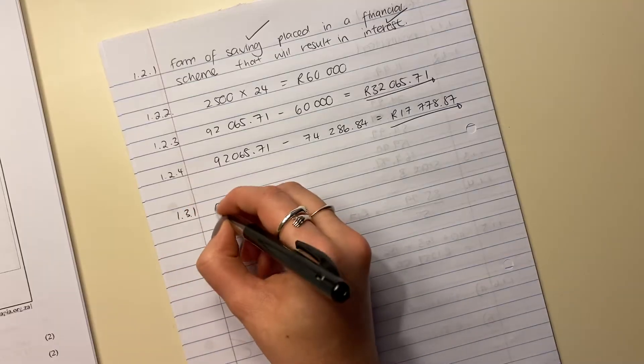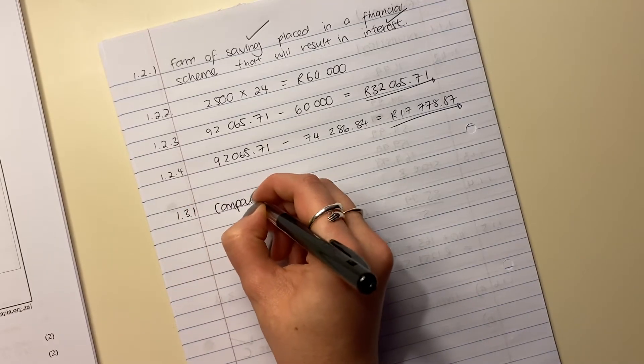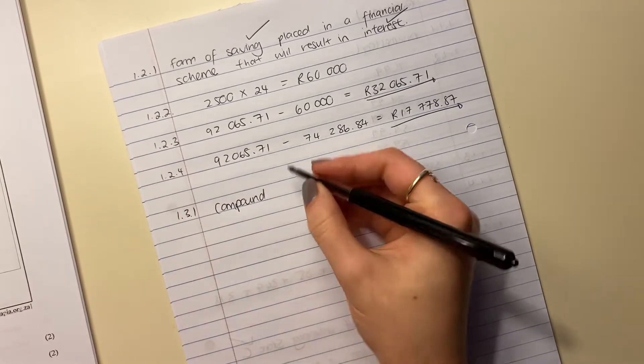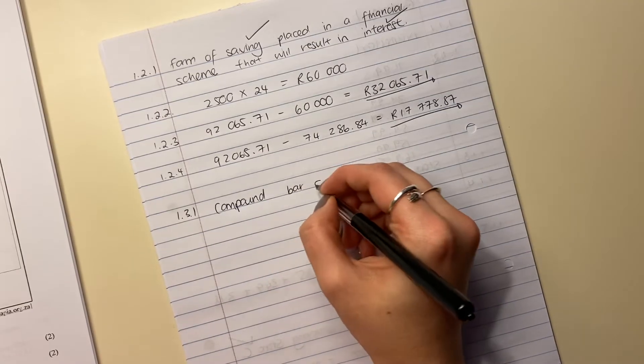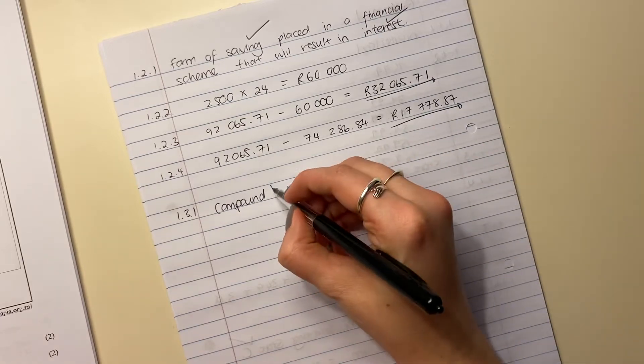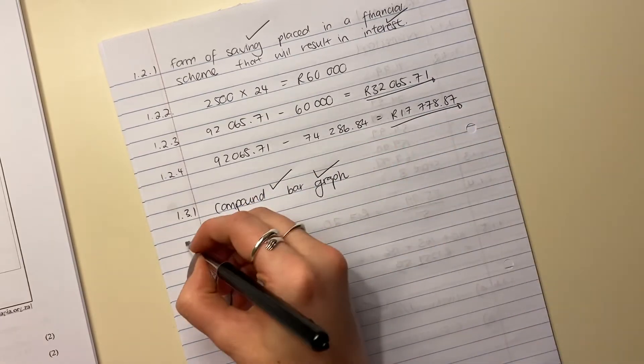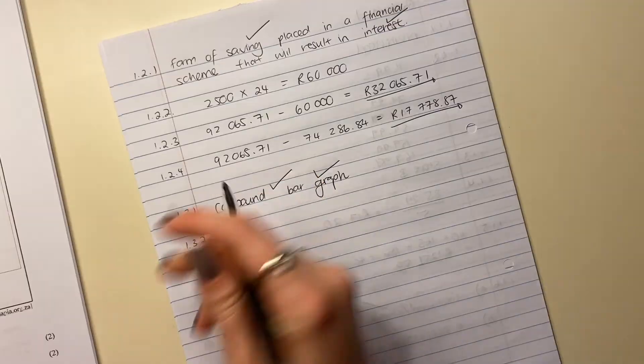1.3.1. It is called a compound. You can call a compound a triple, a grouped, but I just like calling it a compound bar graph. If you don't say the compound bit, you'll lose a mark because there's one mark there and one mark there. So make sure that you're being as specific as possible.